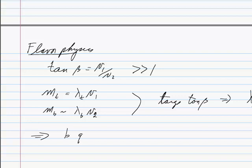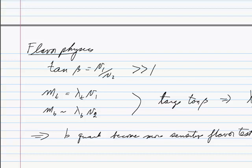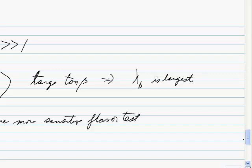The B quark becomes more sensitive to new physics at large tan β. This observation explains why, when you hear talks about flavor anomalies — as seen in the G-2 talk — the B quark ends up being among the natural explanations. That's basically it — came in basically on time, and that's where I stop.